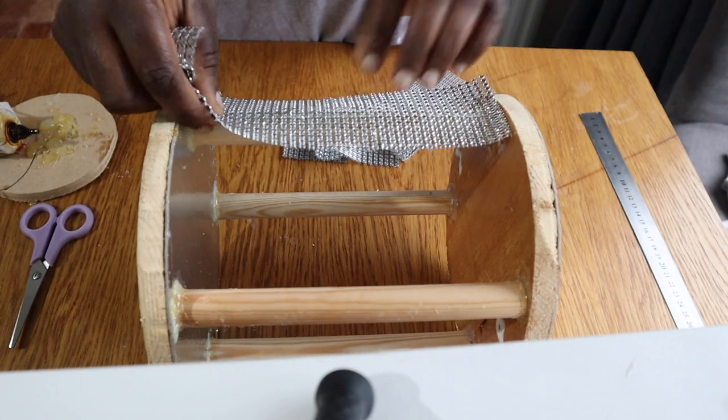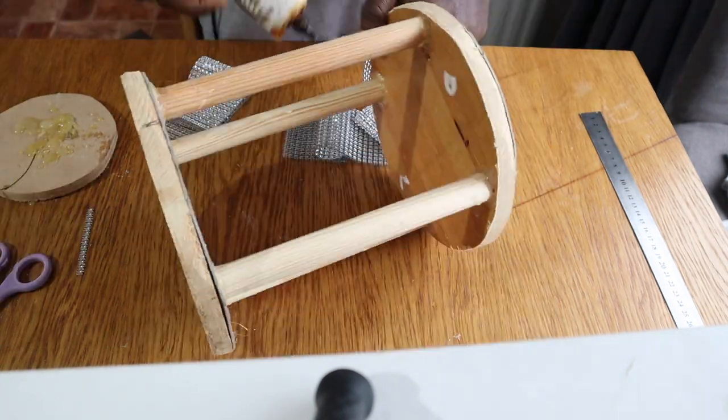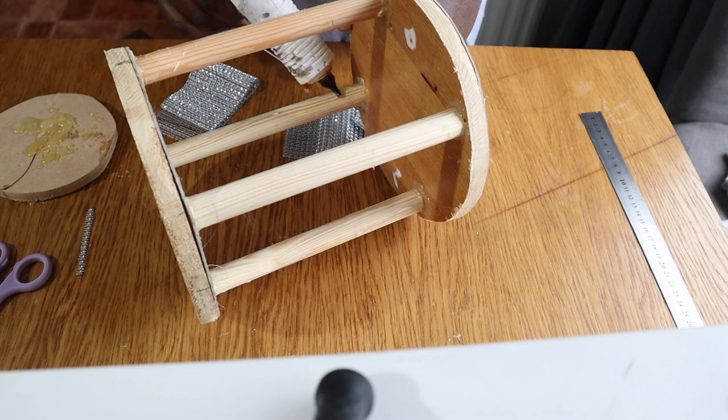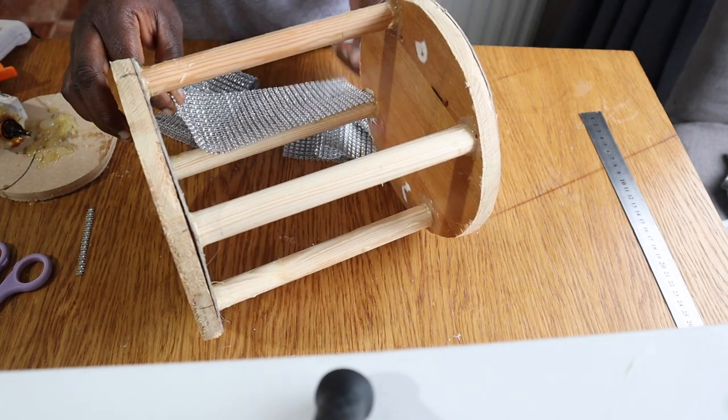Next using the same hot glue I attached the second cake card on top of the gazebo like so. Next I measured and cut out the size of the bling ribbon I needed to cover the dowels. Then using my hot glue I started gluing them on.